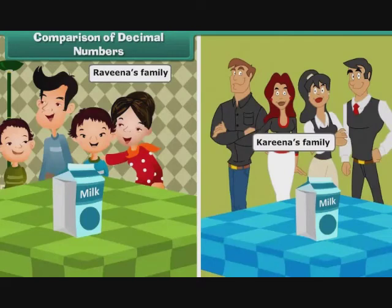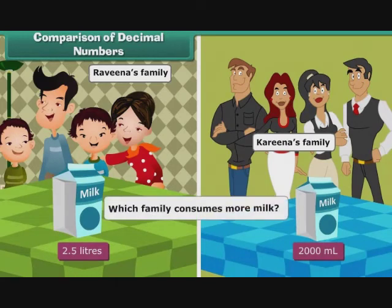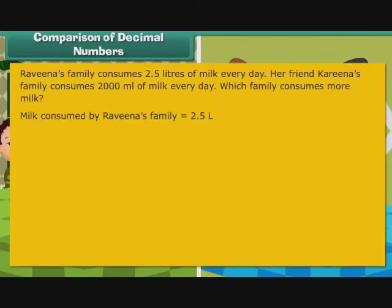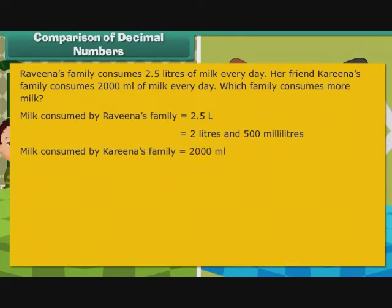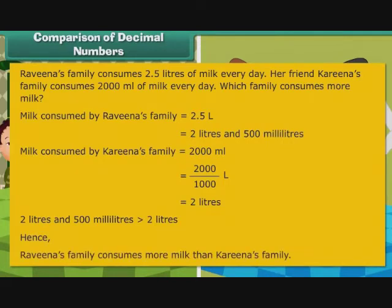Let us look at one more problem. Ravina's family consumes 2.5 litres of milk every day. Her friend Karan's family consumes 2000 mL of milk every day. Which family consumes more milk? Milk consumed by Ravina's family is 2.5 litres, that is 2 litres and 500 mL. Hence, Ravina's family consumes more milk than Karan's family.